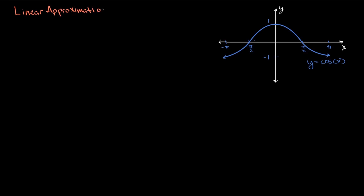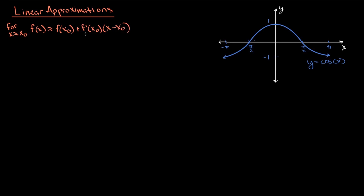In a math textbook, you might see something like this. For x values near x naught, f of x is going to be approximately f of x naught plus f prime of x naught times x minus x naught. This right-hand side is a tangent line for this function, based at x equal to x naught. You use this tangent line to approximate values of the function, and it's accurate for x values near x naught.